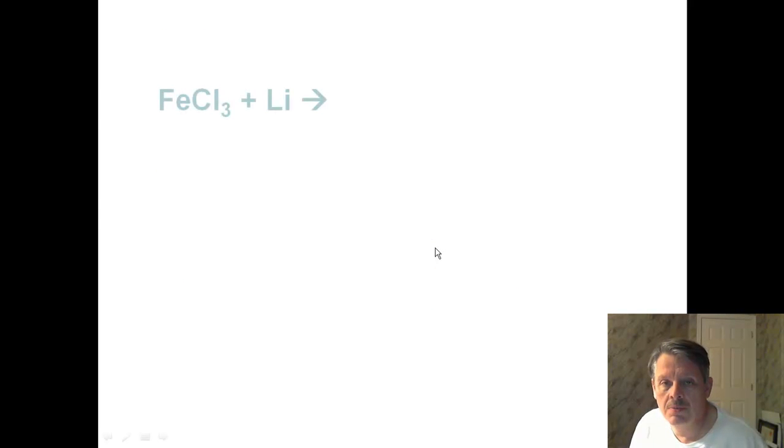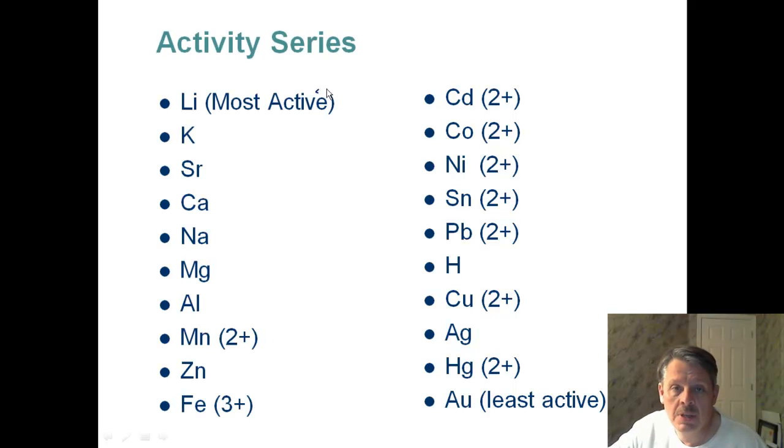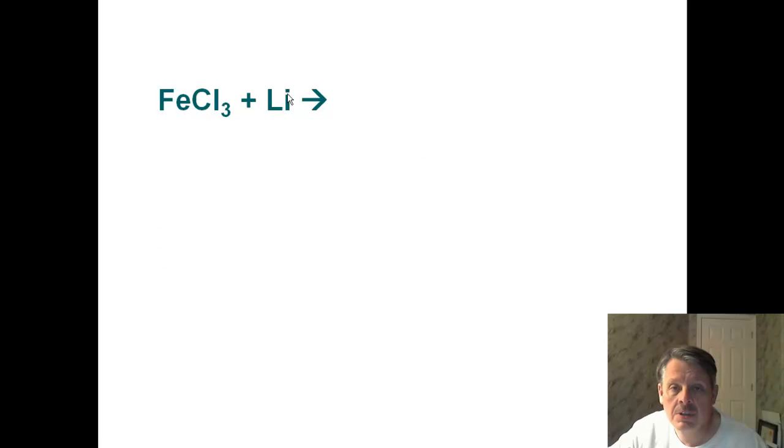All right, let's try another one. All right, this time you try it. Pull out your activity series, see what you think. All right, well, lithium is the most active element on the chart. So when I look at lithium, here's lithium, it's the most active, so it is going to replace the iron. So the iron will be all by itself, so that means it will be a solid, and the lithium is going to bond with chlorine.